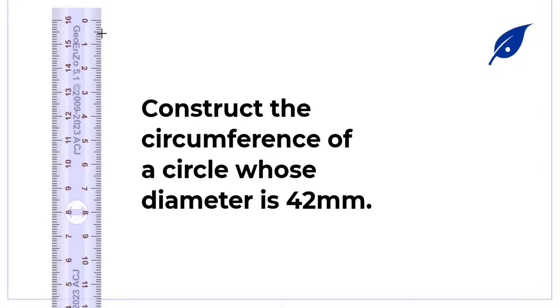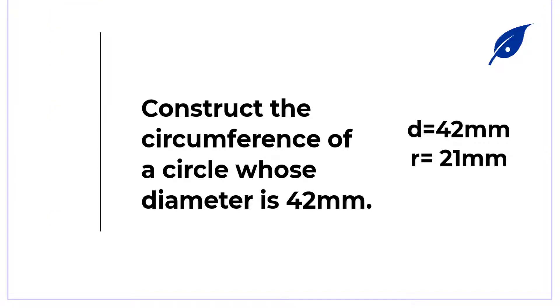Now from this information given to us, we'll be able to construct the circumference of a circle. Given the diameter is 42 millimeters, the radius is going to be 21 millimeters, that's the diameter divided by two. So we draw a vertical line.